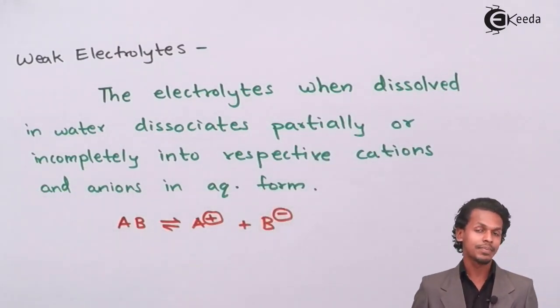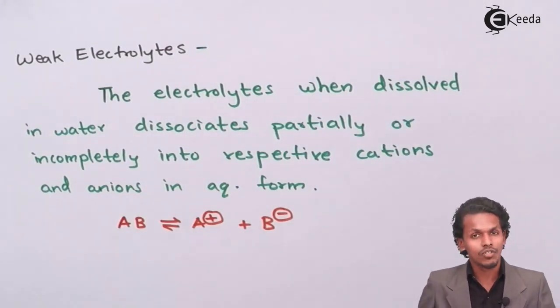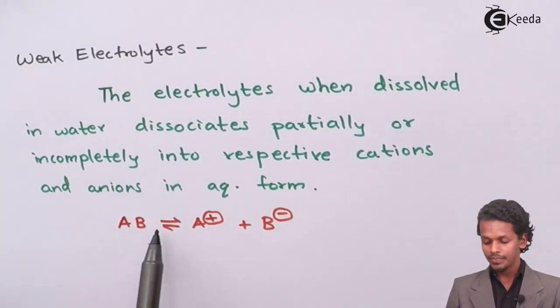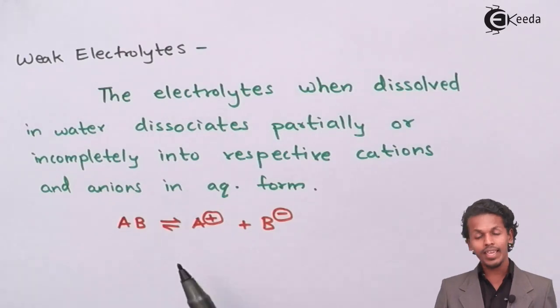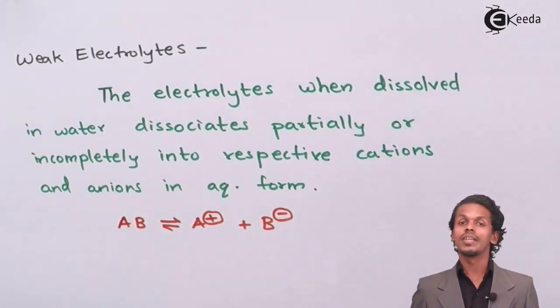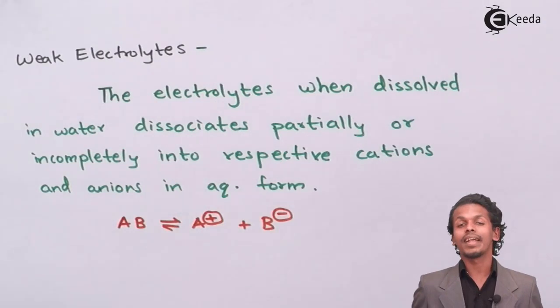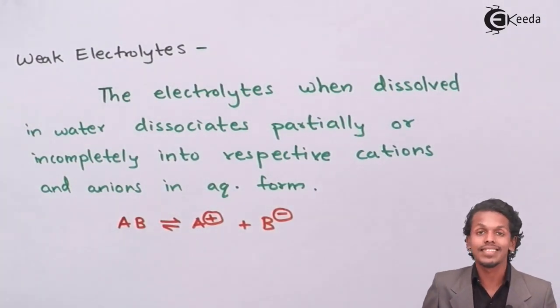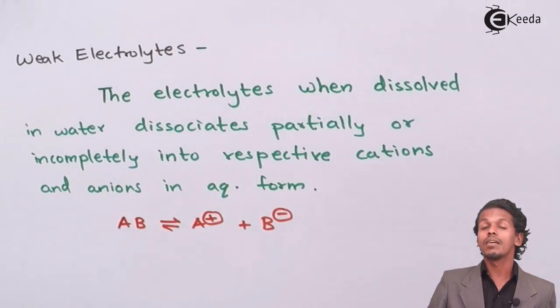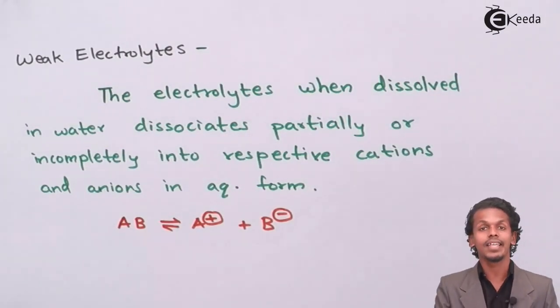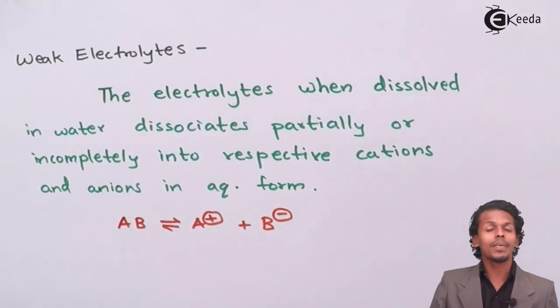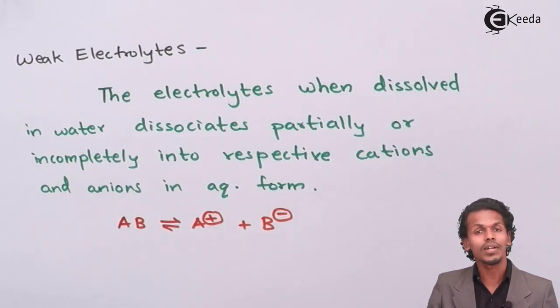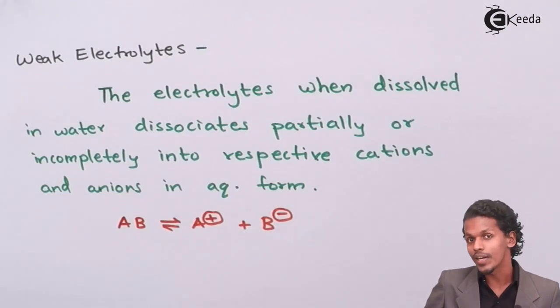In this case suppose if I have dissolved one mole of AB in aqueous solution, then the number of moles of A, that is cation, and the number of moles of B, they might not be one or they might not be equal, they might be less than one. So this will happen only if they have not dissociated completely or they have dissociated partially. And because of this, when current will pass through this solution, the current passed through the solution is not that much efficient as compared to the strong electrolytes.